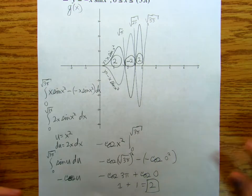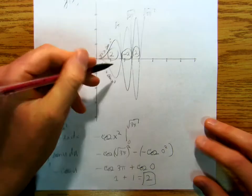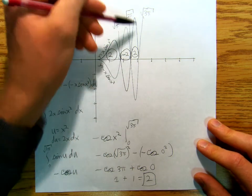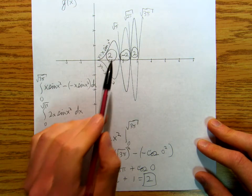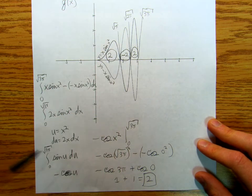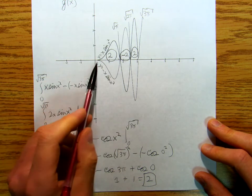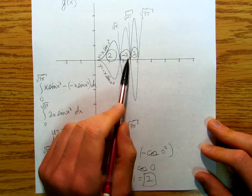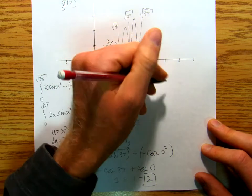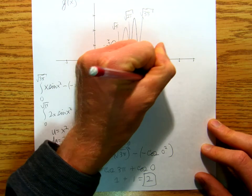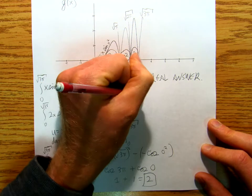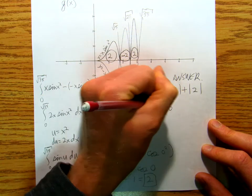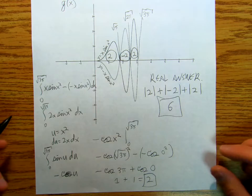So now if I'm taking absolute values, my total area is not going to be two. If I just go from zero to root 3 pi, I get some positives and some negatives that cancel, and I just end up with two. But the real answer is the absolute value of two plus the absolute value of negative two plus the absolute value of two, which is six. So that total area is six.